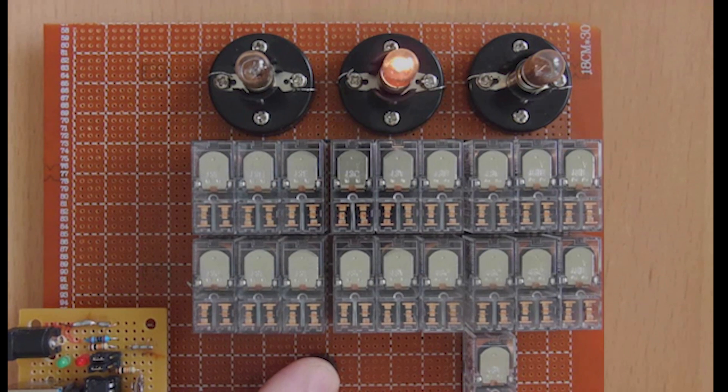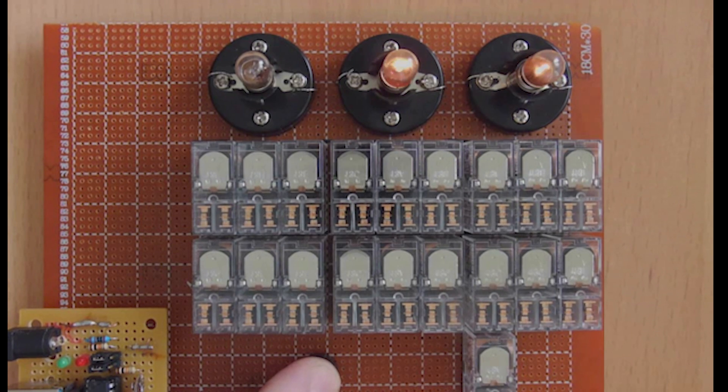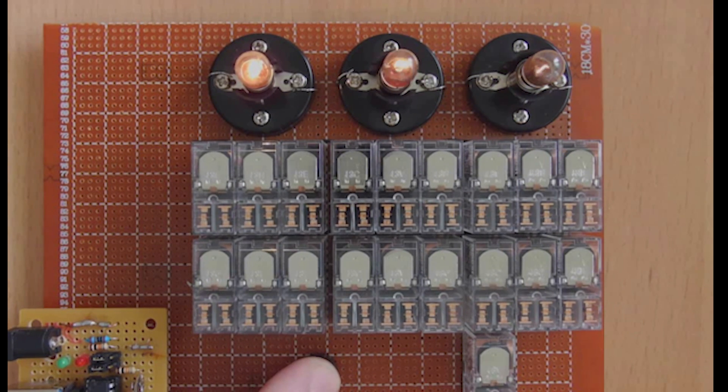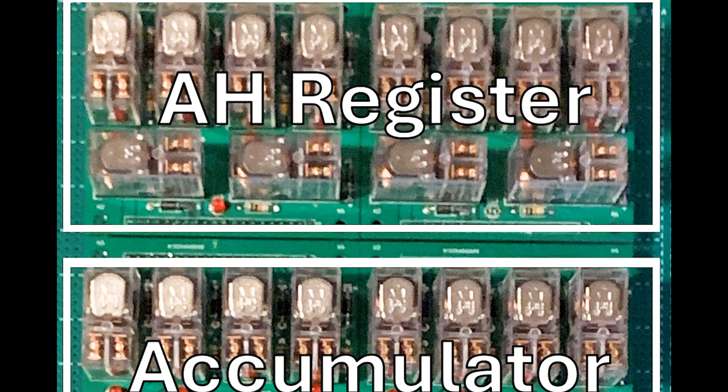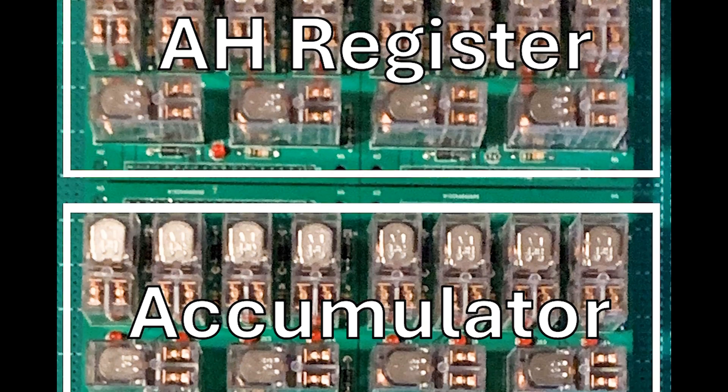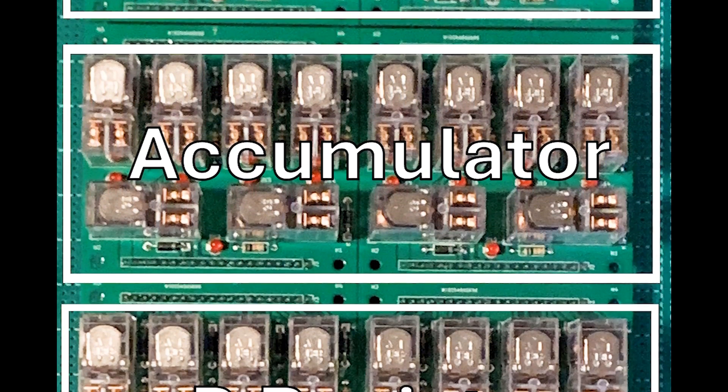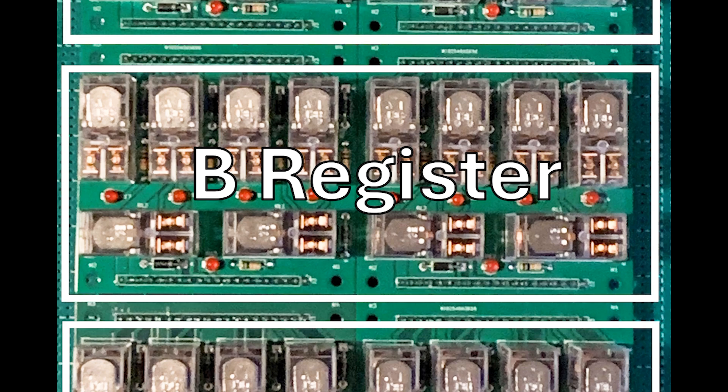The reason I'm harping on about this now is because we're going to start building our relay-based CPU soon, and I'm using these wired OR gates pretty extensively. This is a register board for the CPU, which I'll explain later, but it uses the idea of wired OR gates, particularly to transfer information.